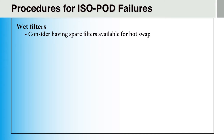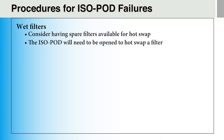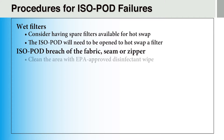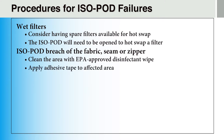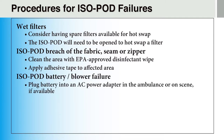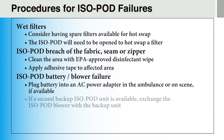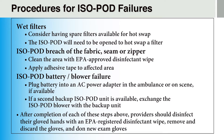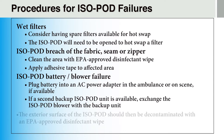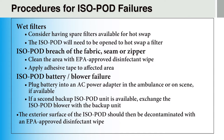Providers should consider having spare filters readily available in the event that the filters on the isopod become wet. In this situation, providers may perform a hot swap of the filters, during which time the isopod will need to be opened. In the case of a breach of the fabric, seam, or zipper of the isopod, the area should be cleaned with an EPA-approved disinfectant wipe and adhesive tape applied to the affected area. If the isopod battery or blower fails, immediately plug the battery into an AC power adapter in the ambulance. If a second backup isopod unit is available, exchange the isopod blower with the backup unit. After each of these steps, providers should disinfect their gloved hands with an EPA-approved disinfectant wipe, remove and discard the gloves, perform hand hygiene with an alcohol-based hand sanitizer, and don new exam gloves. The exterior surface of the isopod should then be decontaminated with an EPA-approved disinfectant wipe.